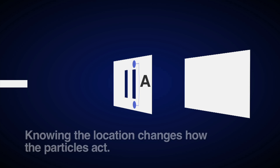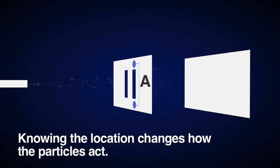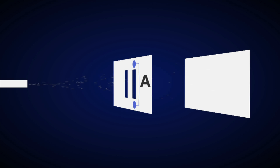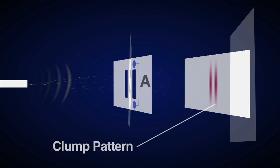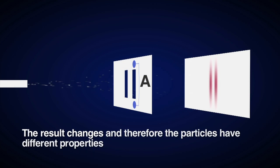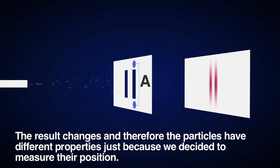Astonishingly, the fact that we know the location of all the particles that go through slit A changes how the particles are. Now, they no longer act like waves, but like particles, or little bits of matter, and therefore no longer create an interference pattern, but a clump pattern, meaning little bits of matter went through the slit, not spread out waves. The result changes and therefore the particles have different properties just because we decided to measure their position.